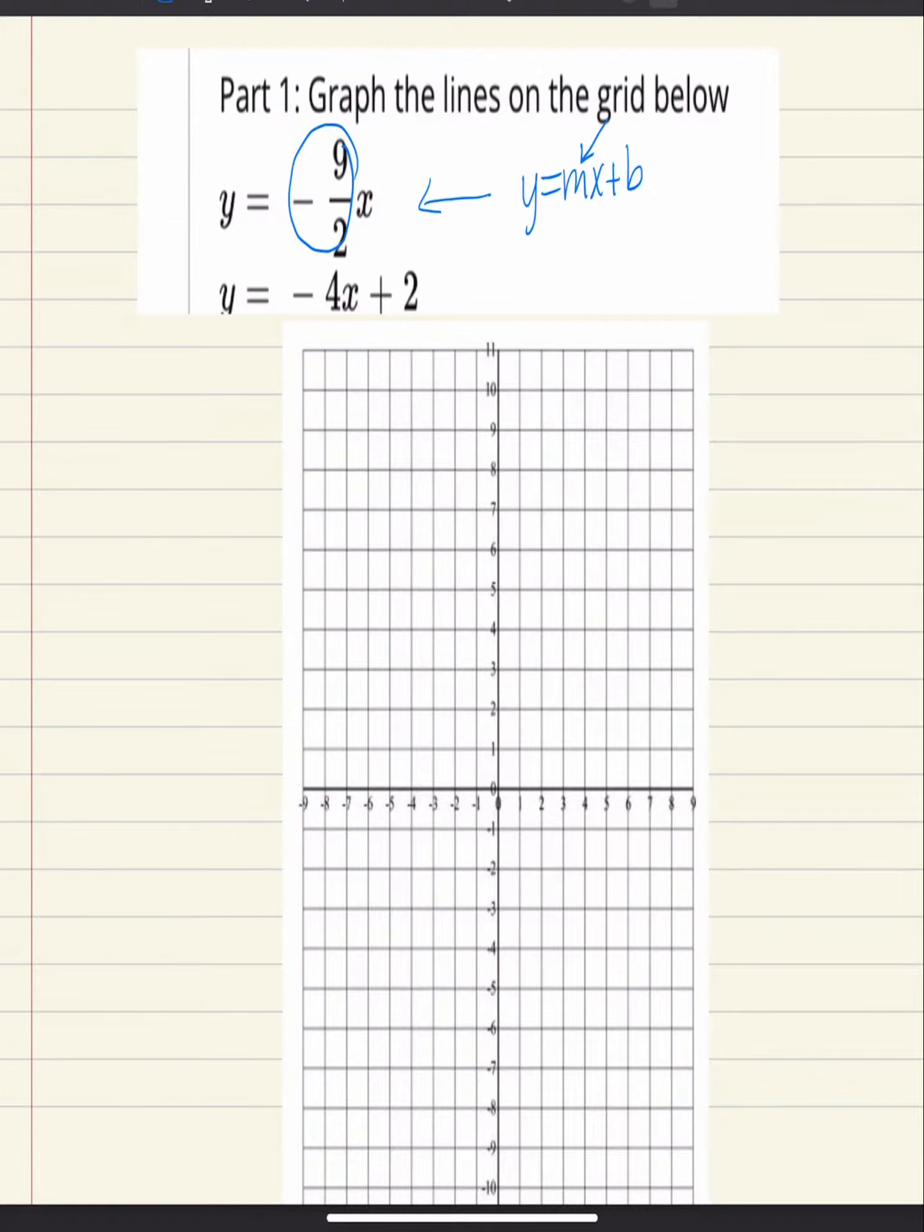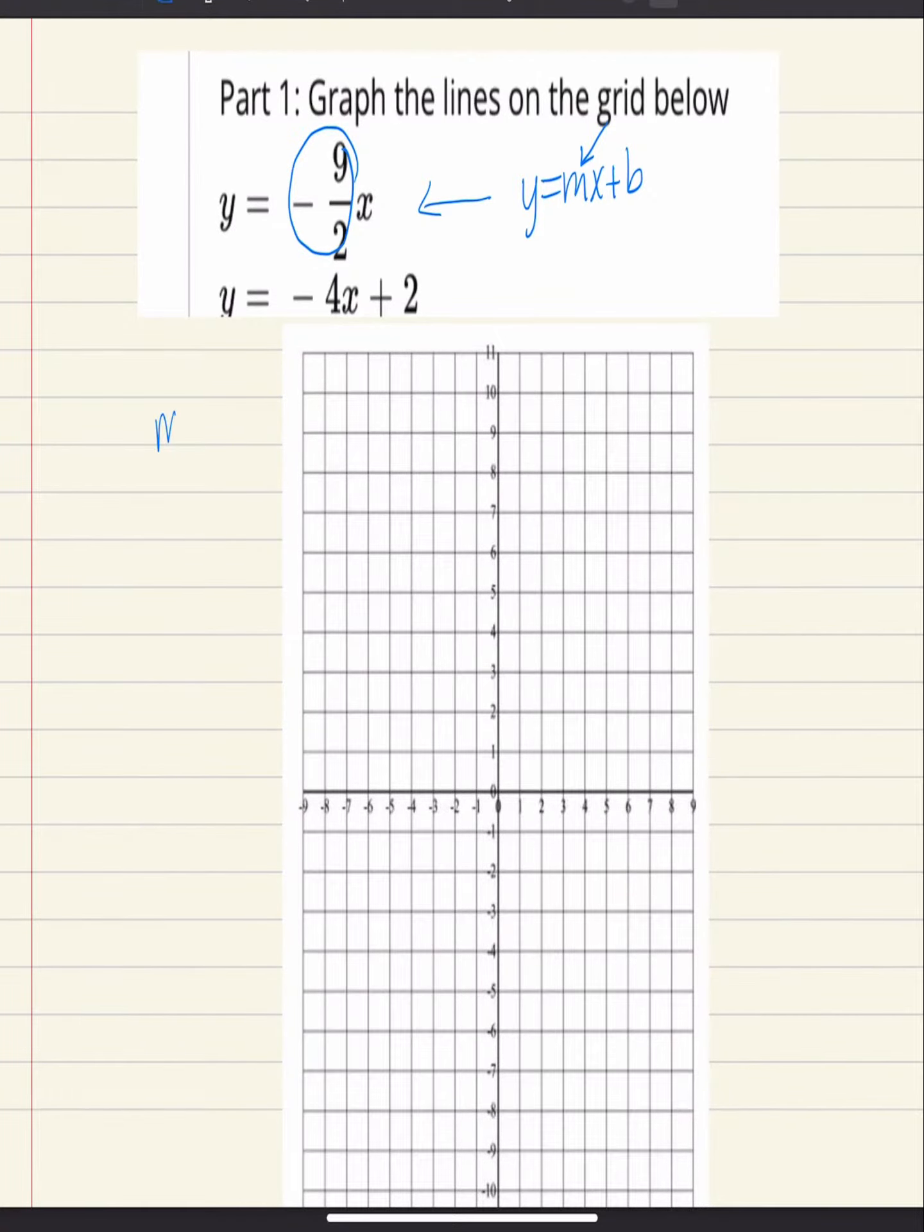So when we are thinking about slope, we are thinking of the rise over run. We know the formula is y minus y over x minus x, but that means change in y over the change in x.